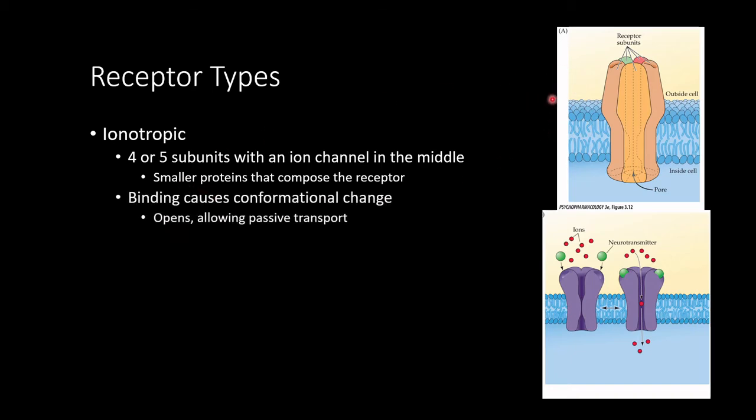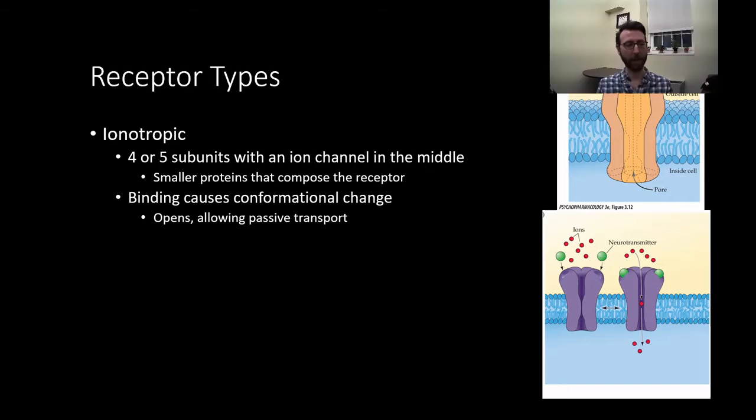Binding at the binding site will cause a conformational change. So the shape of the receptor will change, and with the ionotropic receptor, it's going to cause the ion channel to be open, allowing the passive transport of ions. Remember how we talked about concentration gradient and electrostatic pressure? Those are forces that promote passive transport. No energy is necessary. The ions will move essentially on their own according to those forces. So all that happens with ionotropic receptors is that when the neurotransmitter binds, it causes a change in the shape of this mass of proteins, which will allow ions to flow through.